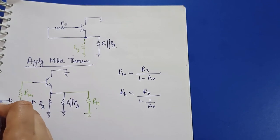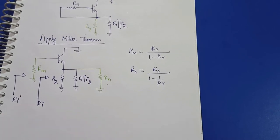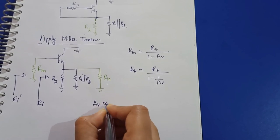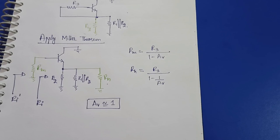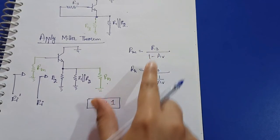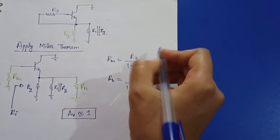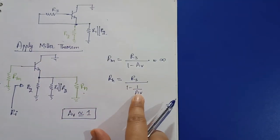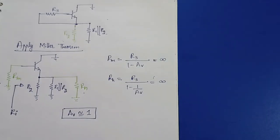The input resistance ri is calculated at one end and the overall input resistance ri-dash is at the other end. For a common collector amplifier, the voltage gain is approximately equal to 1. Substituting this in the Miller's theorem formulas: 1 − 1 = 0, and anything divided by 0 is infinity. So Rm and Rn are infinite — they are open circuits and cannot be included in AC analysis.